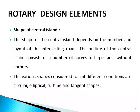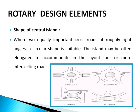The shape of the central island depends on the number and layout of intersecting roads. The outline consists of curves of large radius without corners. Various shapes include circular, elliptical, turbine, and tangent shapes. A circular shape is suitable when two equally important crossroads meet at roughly right angles; the island may be elongated for four or more intersecting roads.